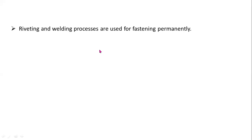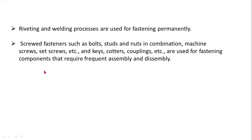Riveting and welding processes are used for fastening permanently, so welded joints and riveted joints are permanent fasteners. Bolts and nuts are temporary fasteners. Screwed fasteners such as bolts, studs, nuts in combination, machine screws, set screws, keys, cotters, and couplings are used for fastening components that require frequent assembly and disassembly.